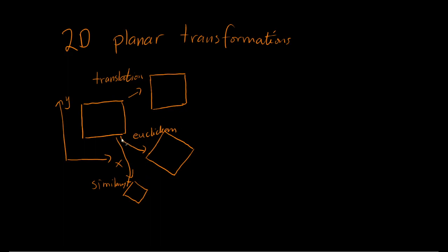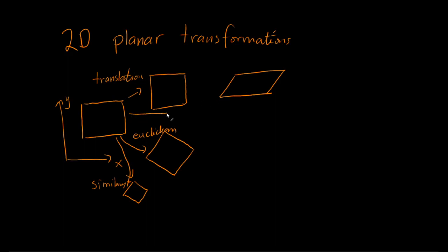Now we are missing two kinds of transformations. We have what is known as an affine transformation, where you are able to tilt the image. That is, you can take the upper part of the image and push it to one of the sides. That would be an affine transformation.